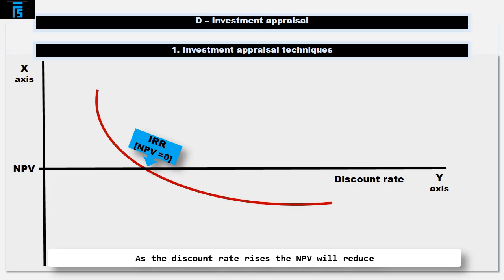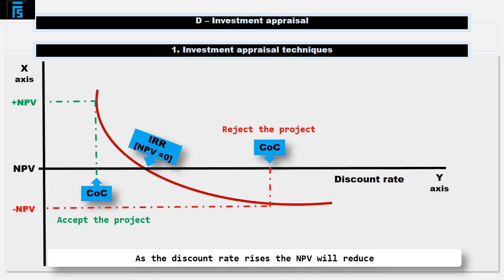The way we interpret the IRR is as follows: if the IRR is greater than the cost of capital, then we would accept the project, because this implies that at the cost of capital, the project has got a positive NPV. With similar reasoning, if the IRR is less than the cost of capital, we would reject the project, implying it has a negative NPV. IRR is sometimes known as the break-even cost of capital because that is the discount rate at which the project breaks even — in other words, where it has a zero NPV. To recap: if the IRR is greater than the cost of capital, accept the project; if the IRR is less than the cost of capital, reject.